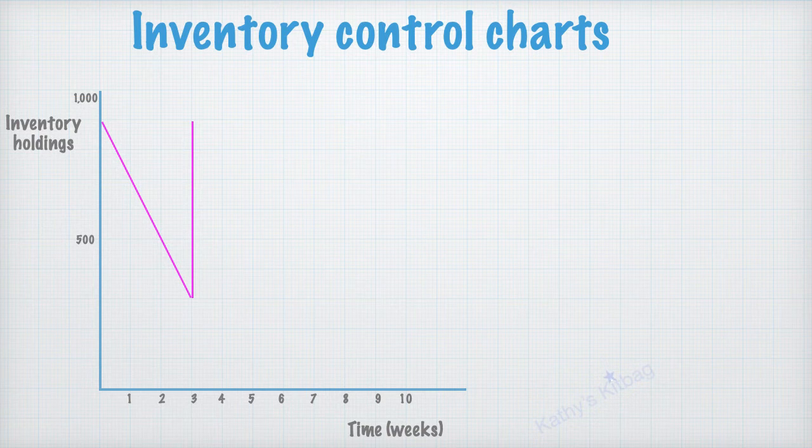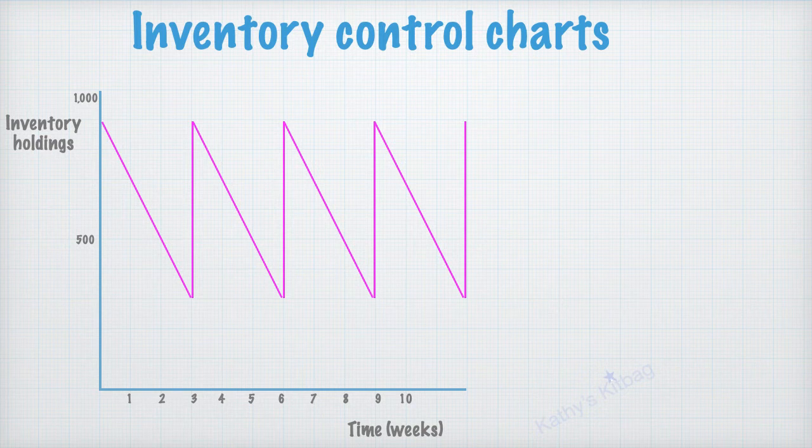And in a typical stock control chart what you'd like to see is this nice regular pattern. So this same thing is playing out every three weeks. The business is using stock and then they're receiving a new order and the stock level is going right back up to 900.